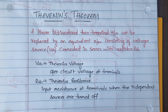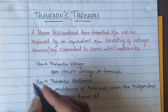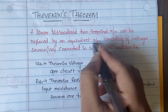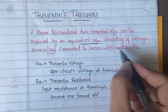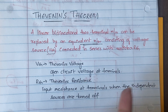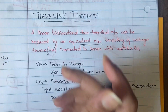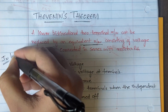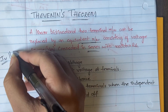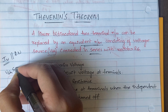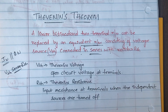If you just go through the definition of this theorem you will not understand anything. If you go through the example problem and solve it along with me — have a pen and paper with you — then only you will understand. A linear bi-directional two-terminal network can be replaced with an equivalent network. In Norton's we take a current source connected in parallel with resistance, but in Thevenin's we take a voltage source connected in series with RTH.